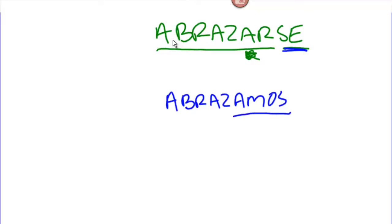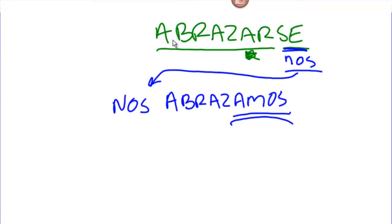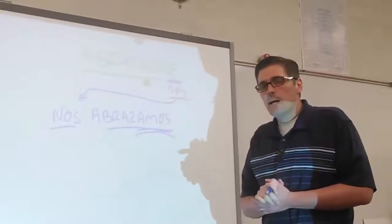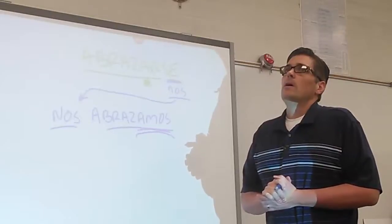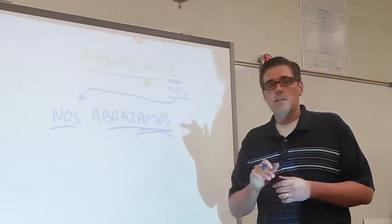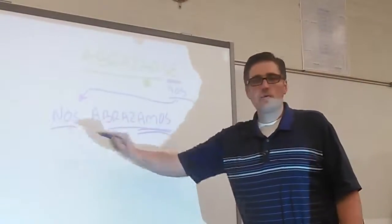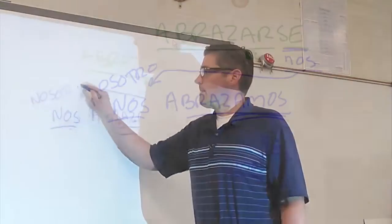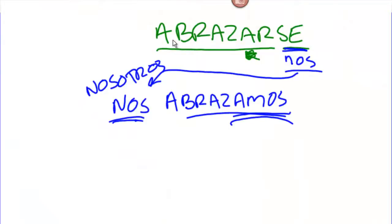So if this is nosotros, the se is going to change into nos. And where do we put pronouns? They typically go either before a conjugated verb or connected to an infinitive. This verb is conjugated, so we throw it out front: nos abrazamos — we hug each other. Don't make the mistake of thinking nos is an abbreviation for nosotros. You can still add nosotros if you want, but it's not necessary: nosotros nos abrazamos — we hug each other.